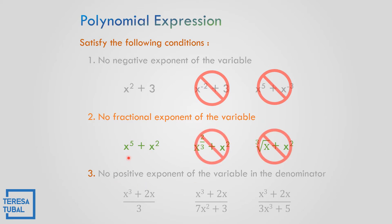That is x to the 3 plus x squared, because the other expressions have fractional exponents: x to the 2/3, and the cube root of x, which is also equal to x raised to 1/3. For condition number 3, no positive exponent of the variable in the denominator — the correct answer is x cubed plus 2x over 3.